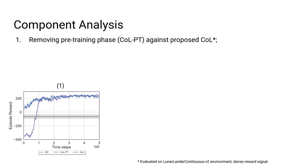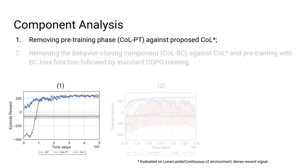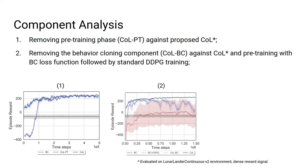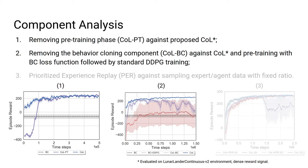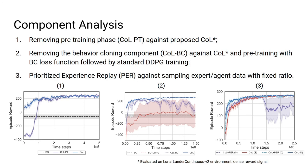Our component analysis showed that the pre-training phase enabled agents to start interacting with the environment with an already reasonable policy, which is essential in real-world robotics applications. It also shows that after the pre-training phase, the behavior cloning loss component leads to more stable policies. Finally, we showed that sampling from both buffers with a fixed ratio outperforms prioritized experience replay for sparse reward scenarios.